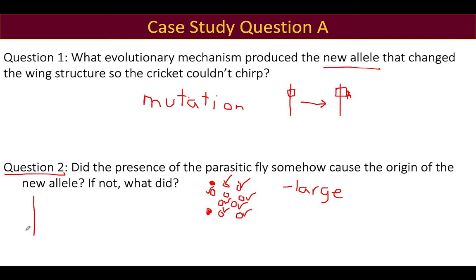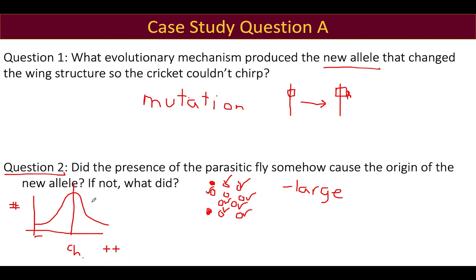The distribution of crickets might look something like a bell curve: most in the middle had optimal chirping, some at one end had very loud or excessive chirping — which might attract other predators or not be preferred by females — and some at the other end didn't chirp. The crickets with the optimal chirping pattern were most successful before the flies arrived, but variation existed across all degrees of chirping.